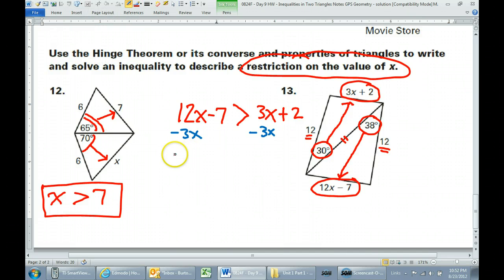So that's going to give me 9x minus 7 is greater than 2. All right? What am I going to do now?